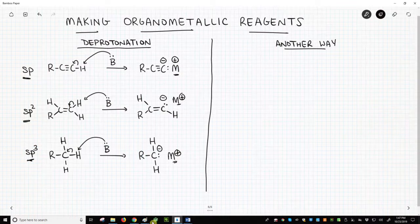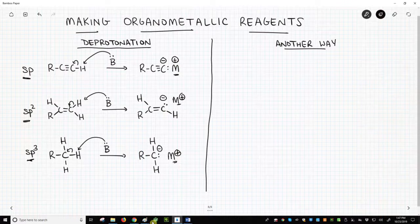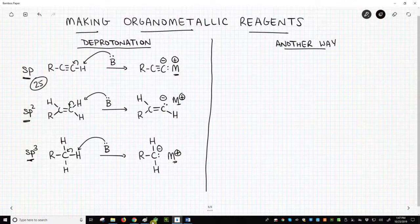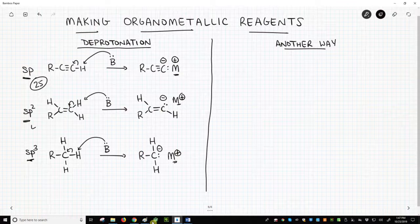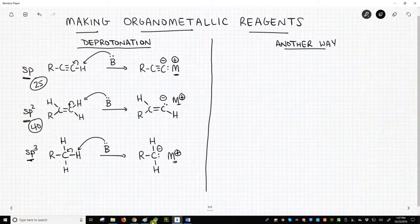You may know that the pKa of the CH bond varies based on the hybridization of the carbon. SP carbons have a pKa of around 25, SP2 carbons are around 40, and SP3 carbons are about 50.